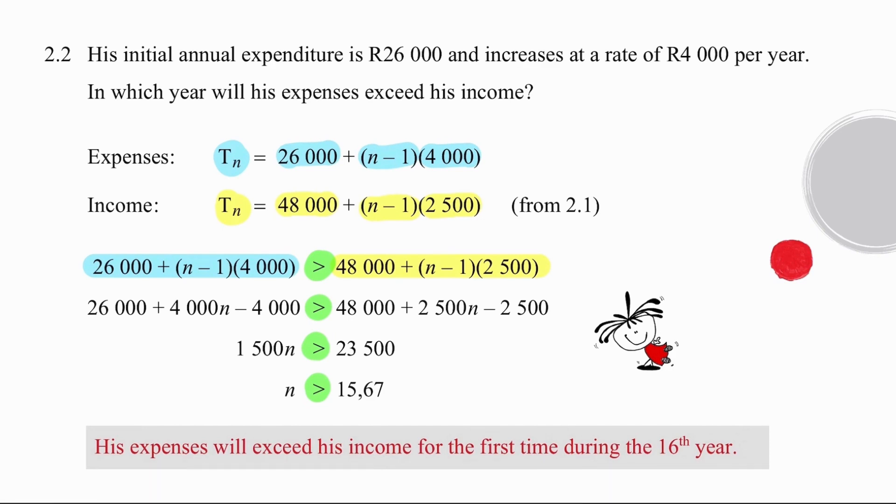Simplifying the two sides and working out the value of n produces an outcome whereby n has to be greater than 15.67. This means that he has enough money to cover his expenses for 15 years but after that he runs into trouble, so his expenses will exceed his income for the first time during the 16th year.